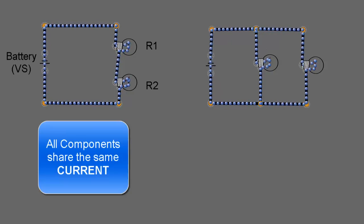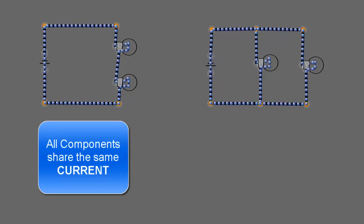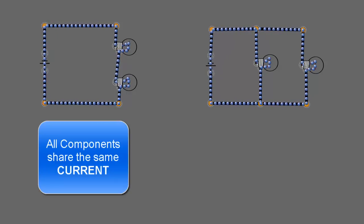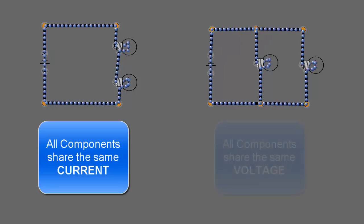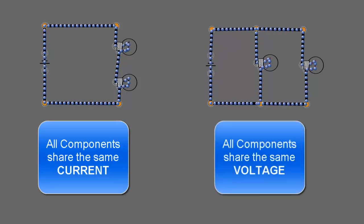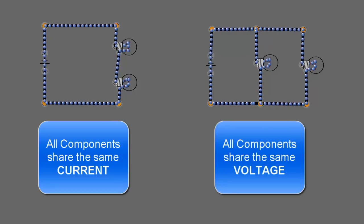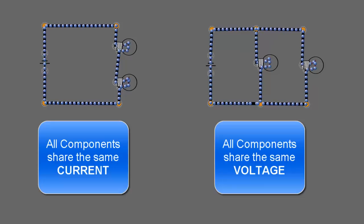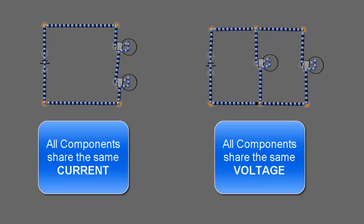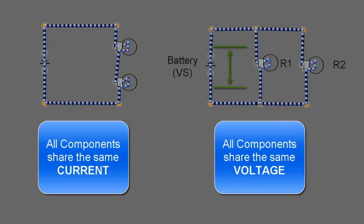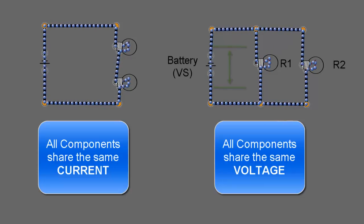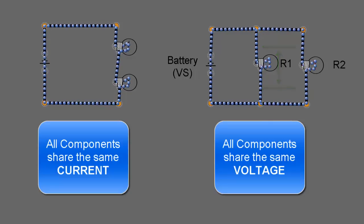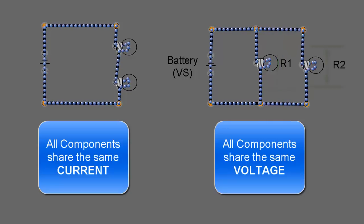If we added more components, those components would share that current also. In parallel circuits, all components share the same voltage — the voltage across the power supply is the same as the voltage across R1, which is the same as the voltage across R2.